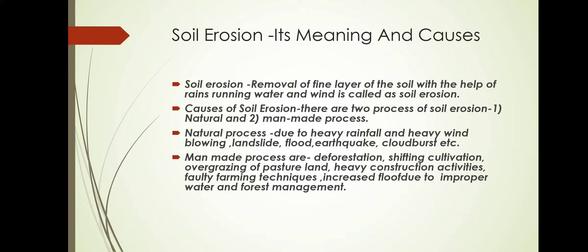The man-made process is the same as we learnt for land degradation. It includes deforestation, slash and burn type of cultivation, shifting cultivation, overgrazing of pasture lands, and heavy construction activities for developing infrastructure. Then there are faulty farming techniques, including fallowing, over-irrigation, and cultivation of the same crop again and again, which ultimately leads to decline in soil fertility.